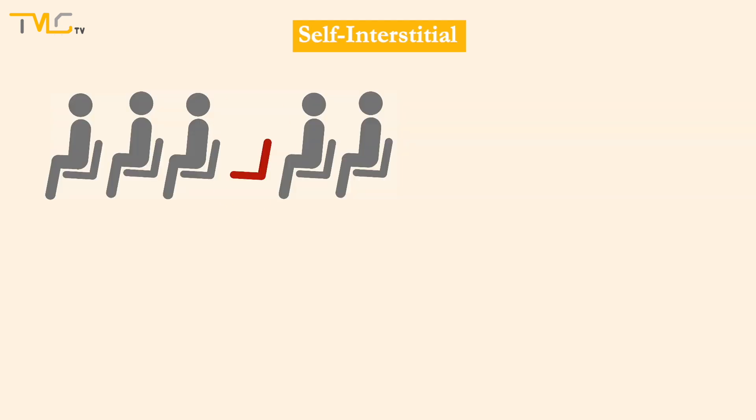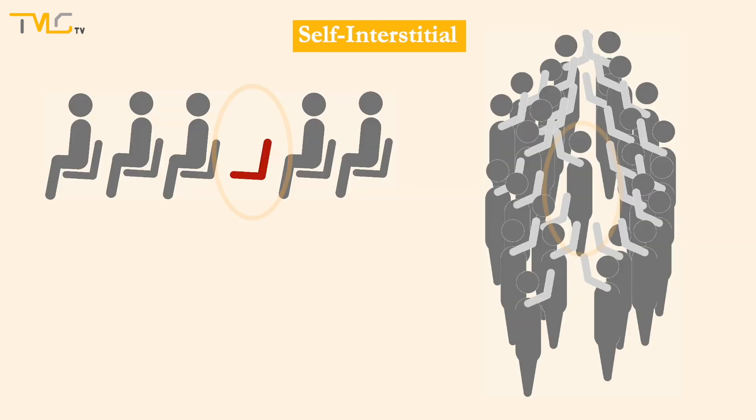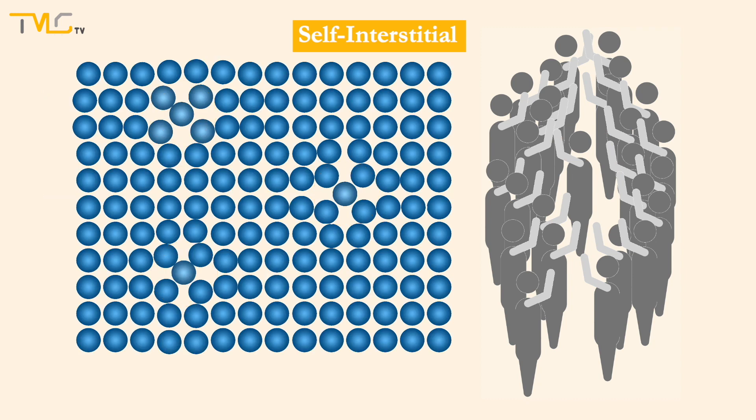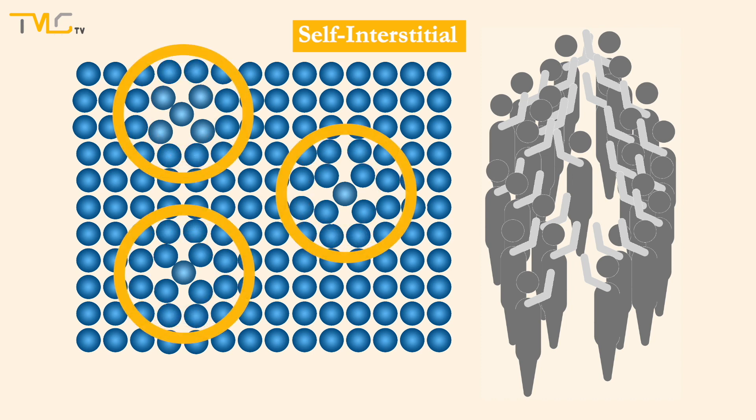A self-interstitial defect is simply the opposite of a vacancy. An atom in the crystal lattice gets into an interstitial site, which is an empty space that can accommodate that atom with some lattice distortion. Compared to vacancies, the probability of having a self-interstitial defect is much lower, since it distorts the lattice.